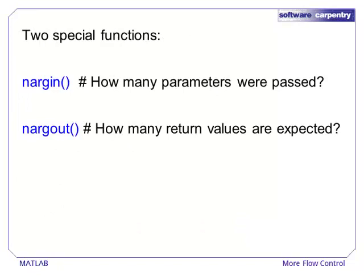The eigenvalue function, and many other functions in MATLAB, make use of two special functions called nArgIn and nArgOut to tell how many parameters were passed into the function and how many return values are expected.